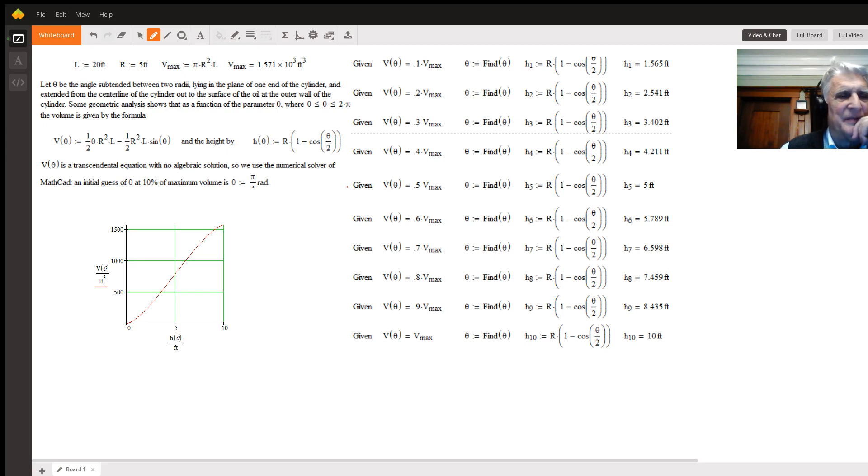It's desired to make a dipstick that could be let down straight across the diameter of the tank, marking places where each mark represents an increase of 10% of the volume from the bottom. A little work with geometry will show that the volume is a function of theta, where theta is the angle subtended by two radii.